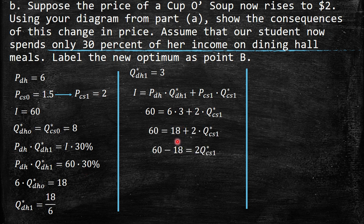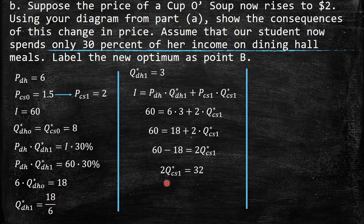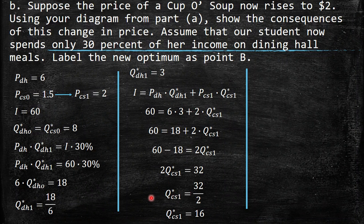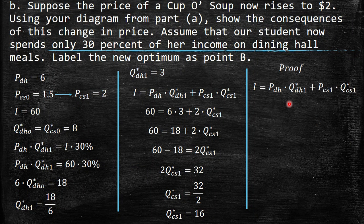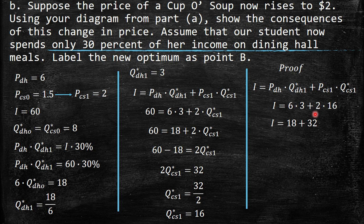To verify: 6 times 3 is 18, plus 2 times 16 is 32, and together that gives income of 60. So that checks out. We can now represent that in the graph. The soup maximum on the x-axis moves from 40 to 30 because with $60 at a price of $2, you can only consume 30 soups instead of 40. The dining hall intercept stays at 10. The new optimum point B is at quantity 3 for dining hall and 16 for soup.